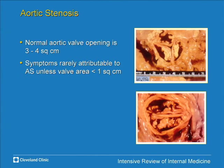The normal aortic valve area is 3 to 4 square centimeters, but we don't expect symptoms until the valve area is less than 1 square centimeter in a normal-sized individual. It takes quite a lot of stenosis to become symptomatic. If somebody has a valve area of 1.5 or 2 square centimeters and is experiencing shortness of breath or chest pain, we wouldn't necessarily attribute that to aortic stenosis.